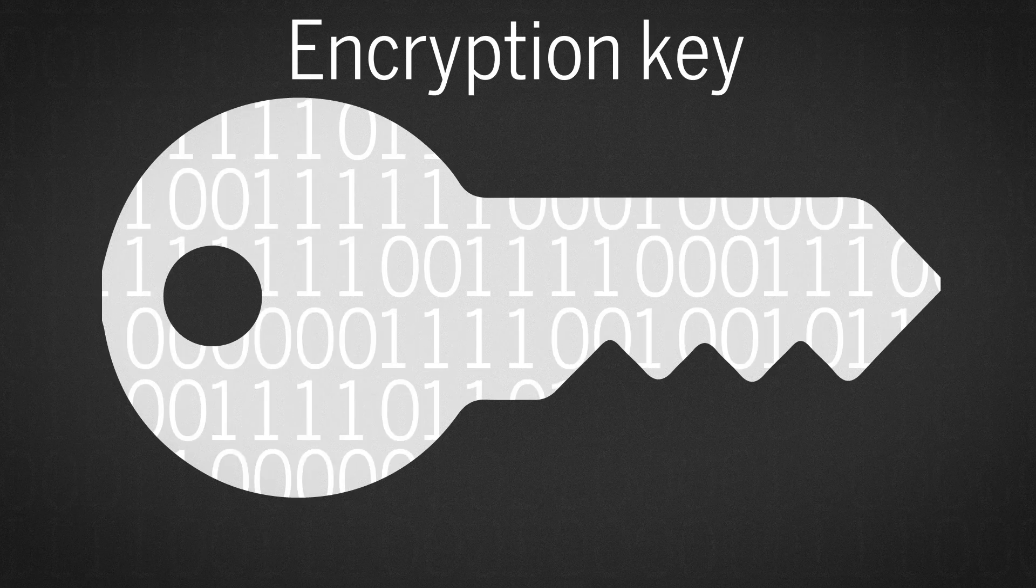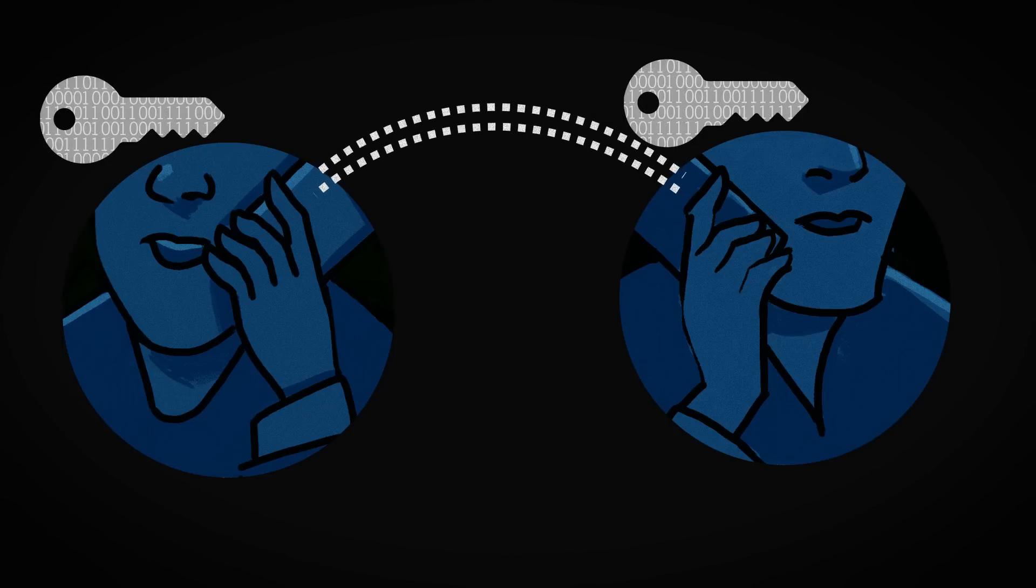With entangled encryption keys, two people in separate locations could communicate secretly with each other, and any attempt at eavesdropping would be noticed.